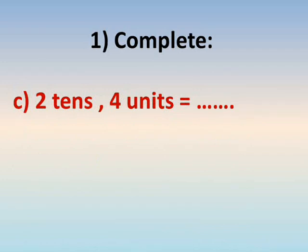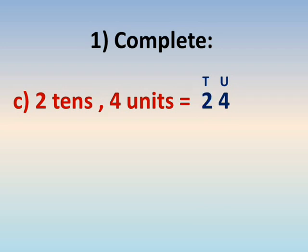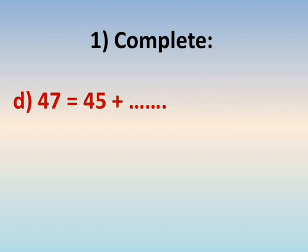Number C: Two tenths and four units. Again, write units in the right hand side and tens in the left hand side. Write four under the units digit and two under the tenth digit. It will be twenty-four.